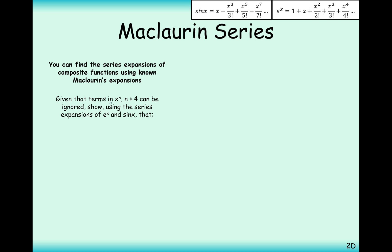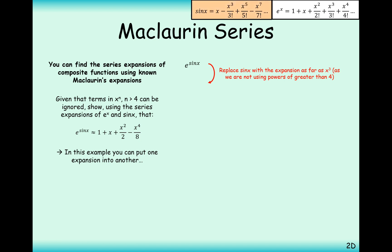Moving on to the next question. Given that terms in x to the n where n is greater than 4 can be ignored, show that using the series expansions for e to the x and sin x, e to the sin x is approximately 1 + x + x²/2 - x⁴/8. In this example you can put one expansion into another. The sine expansion up to power 4 maximum — up to power 3 — is x minus x³/3!. We can split this using the negative: it's e to the x, times e to the minus x³/3!.